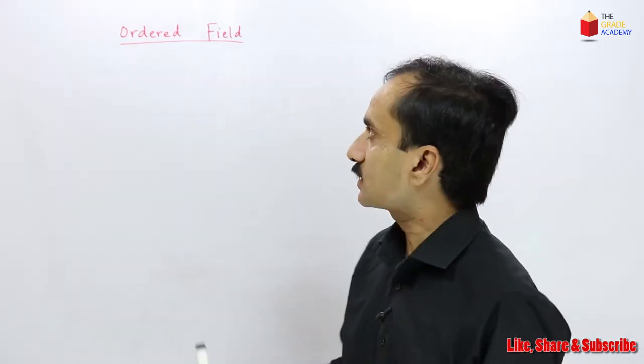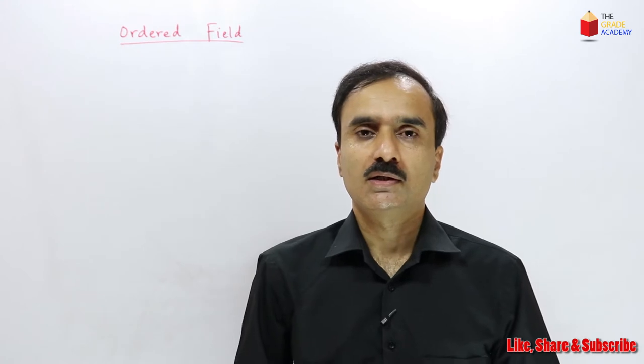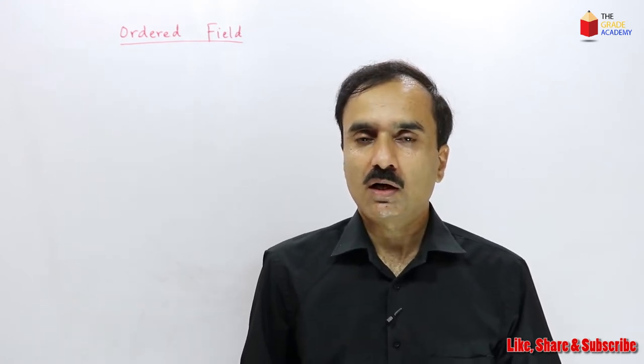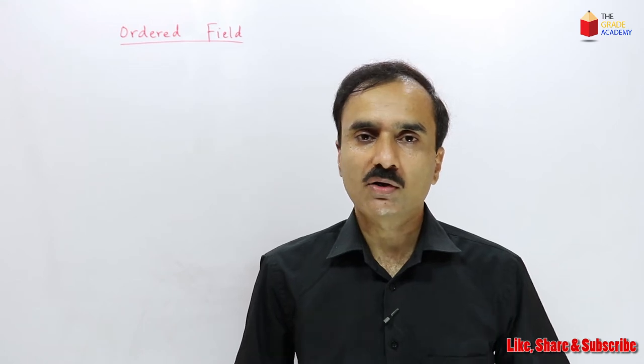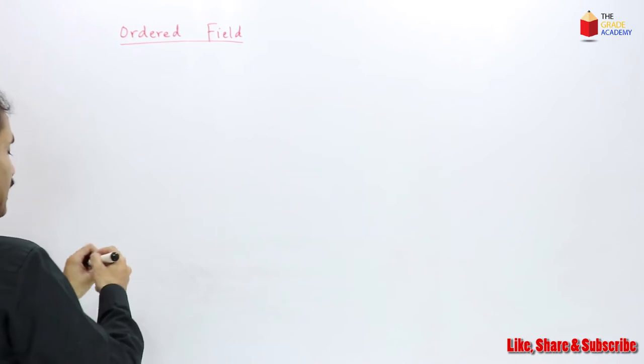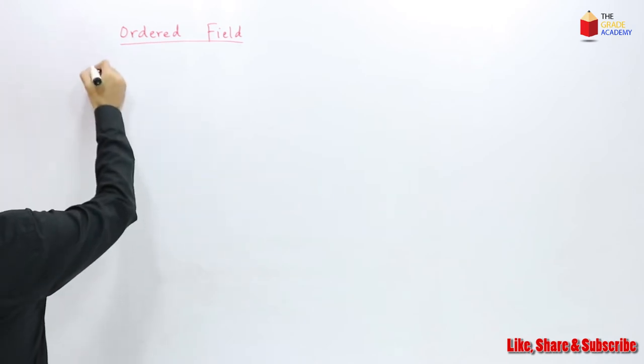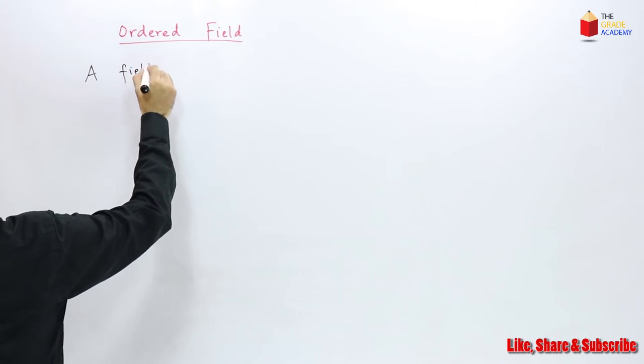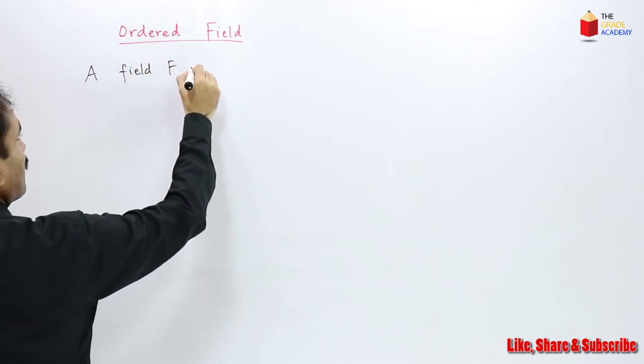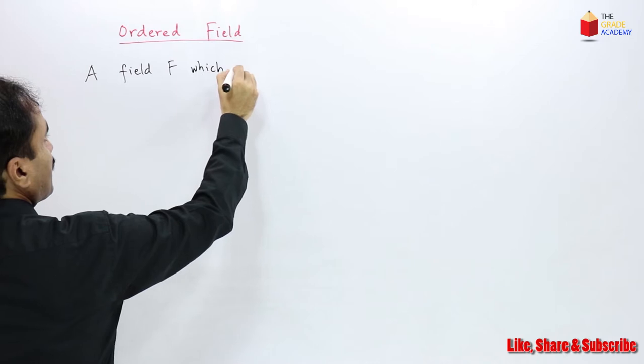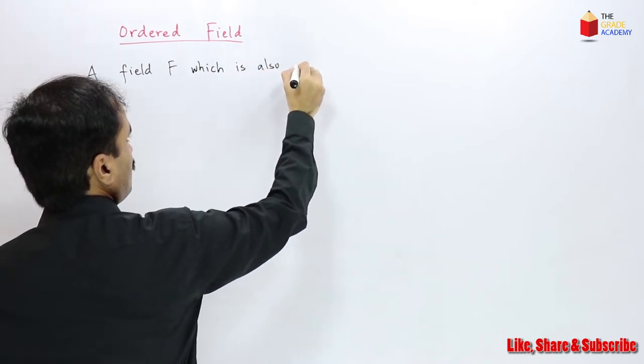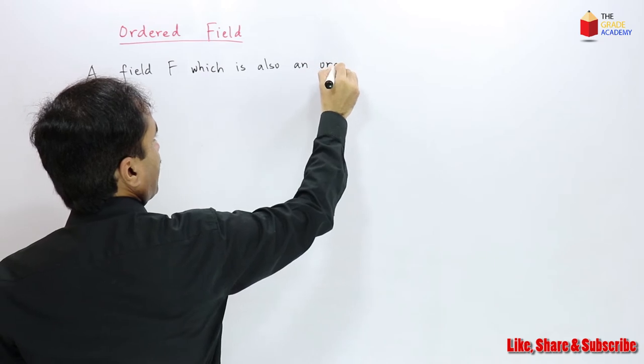In today's lecture, we are going to discuss an ordered field. An ordered field is a field which has an order defined on it. We can define an ordered field as a field F which is also an ordered set.